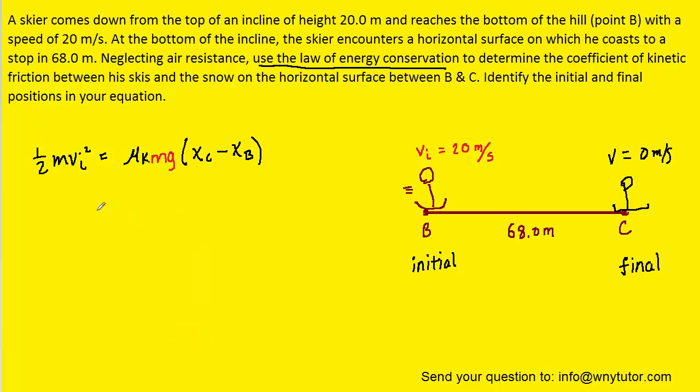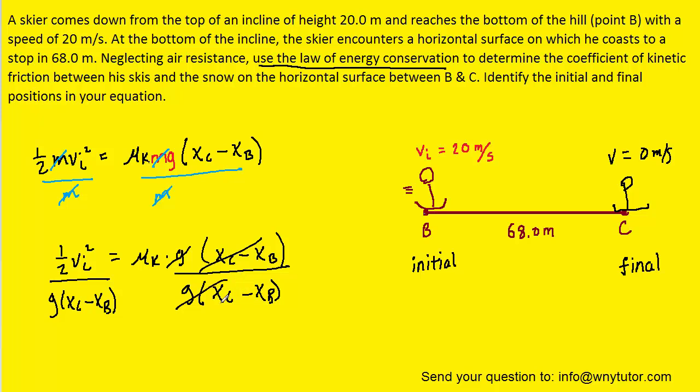And then conveniently, because mass appears on both sides of the equation, if we divide both sides of the equation by the mass m, the masses will cancel out. And then since we're looking for the coefficient of kinetic friction, which is this mu k term, we can divide both sides of the equation by g times the displacement. And by doing that, we're going to cancel out those terms on the right-hand side of the equation, here. And that's going to leave us with mu k.